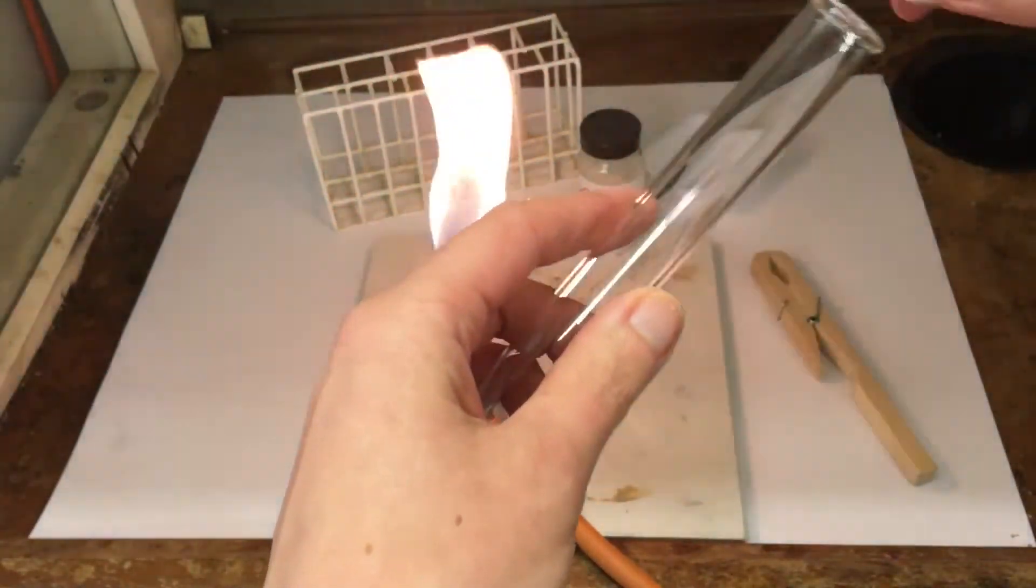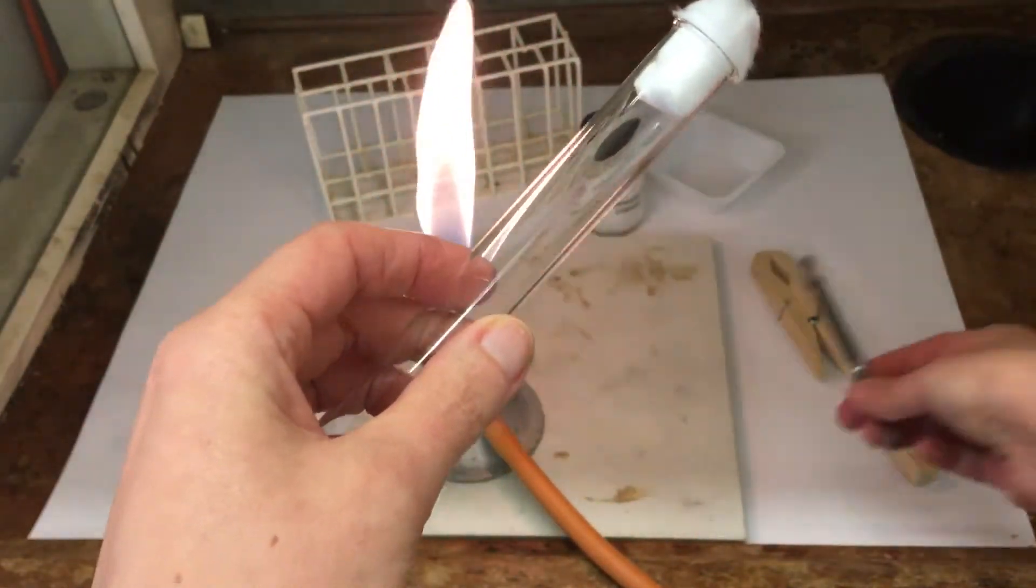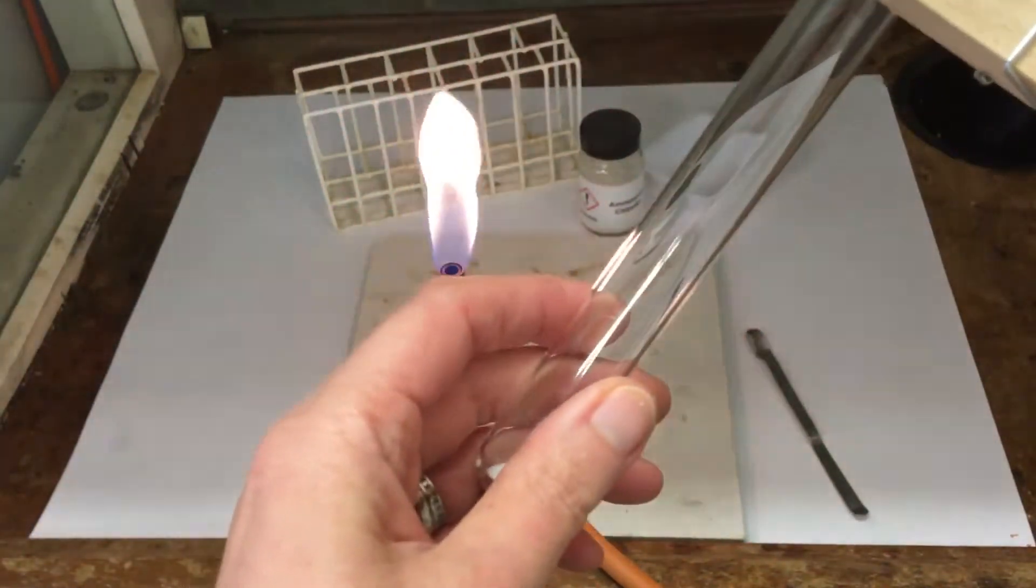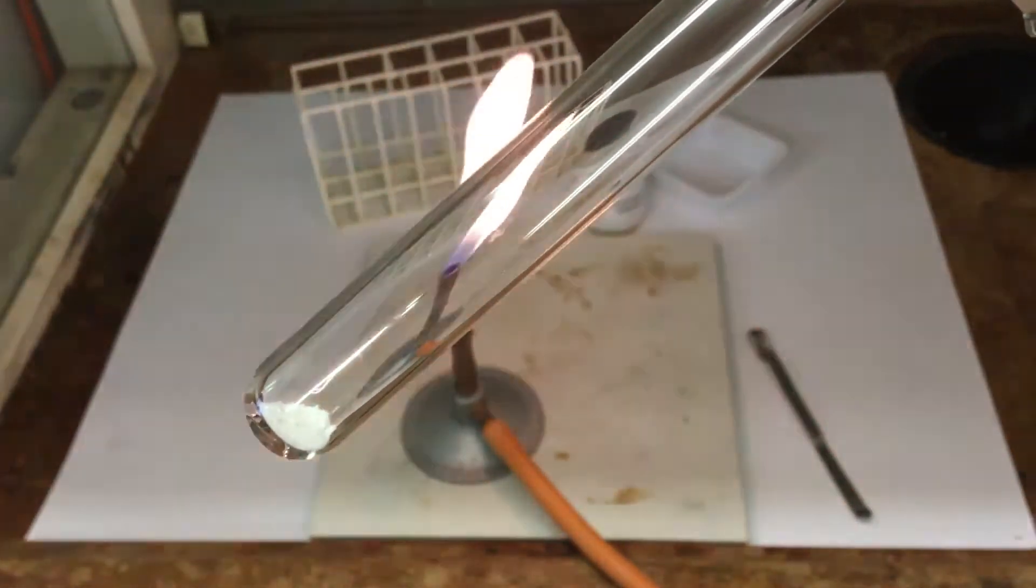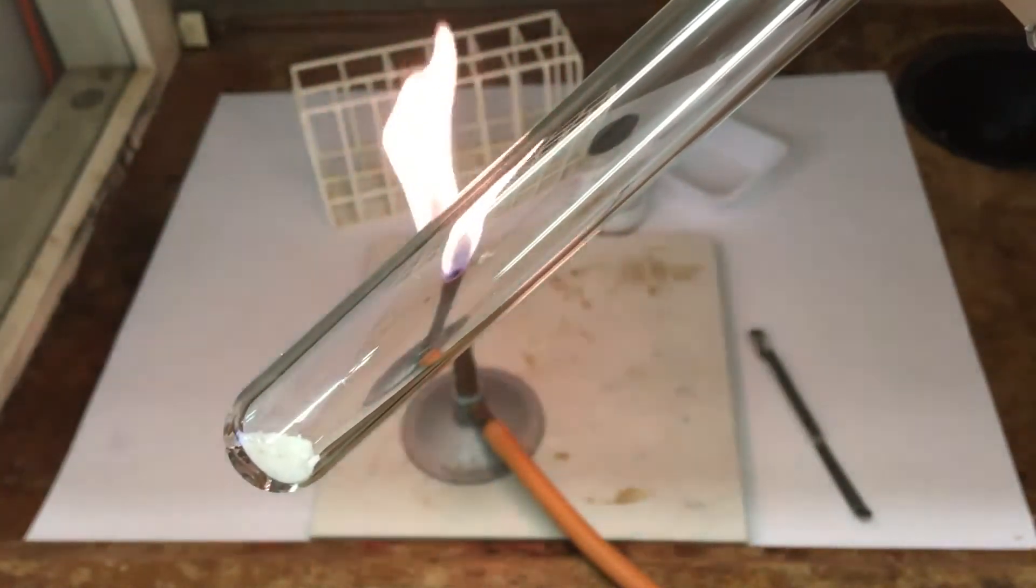We're going to pop a plug of cotton wool in the top. Now we're going to hold it with our tongs. You can see the white powder ammonium chloride in the bottom of the test tube. We're going to heat it with a Bunsen flame and observe what happens to the solid.